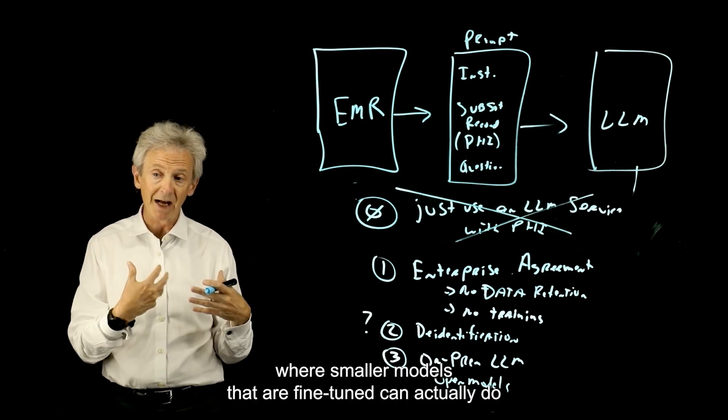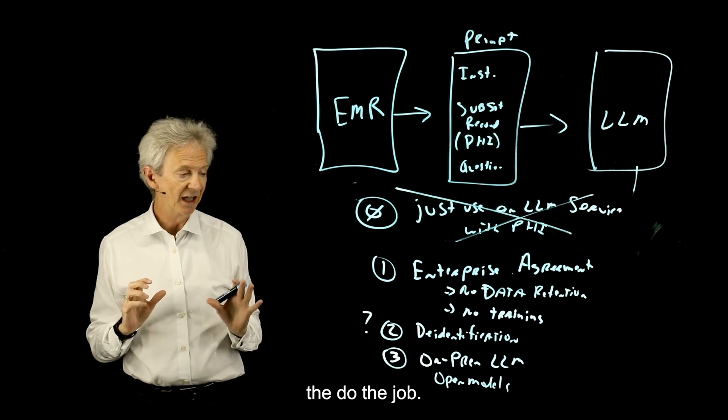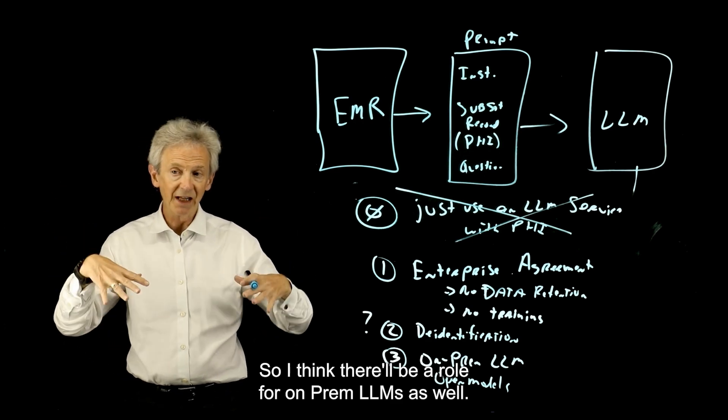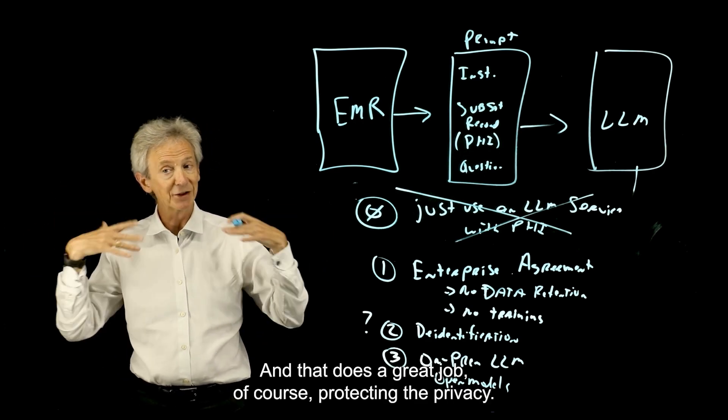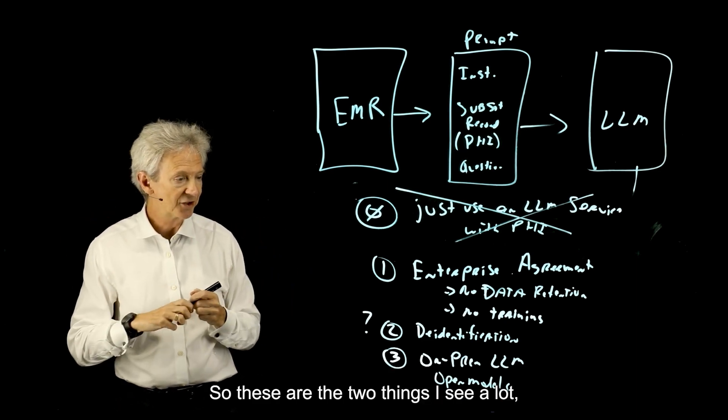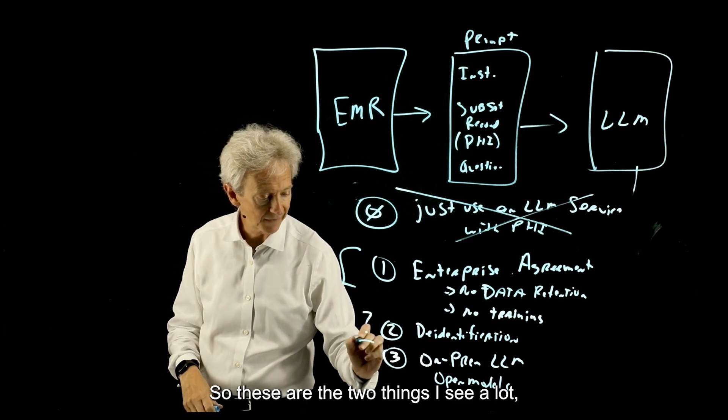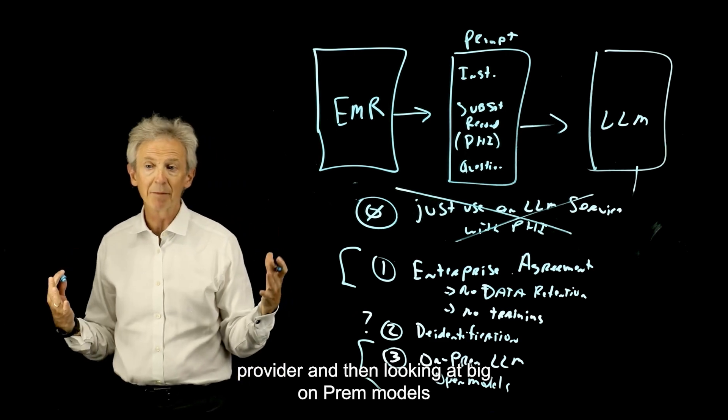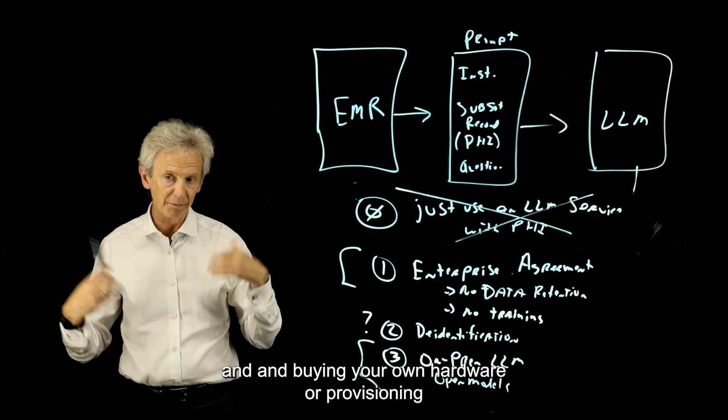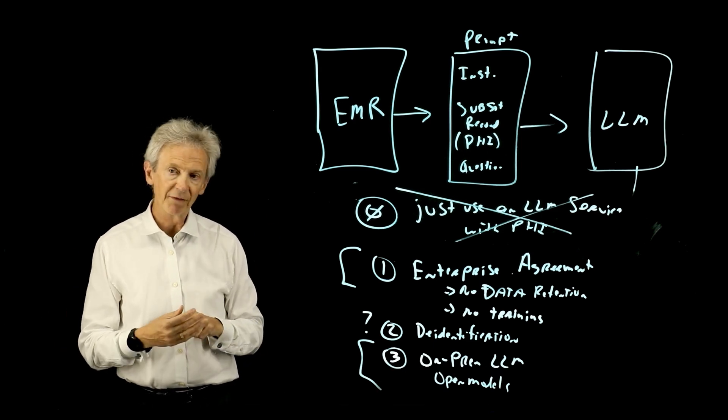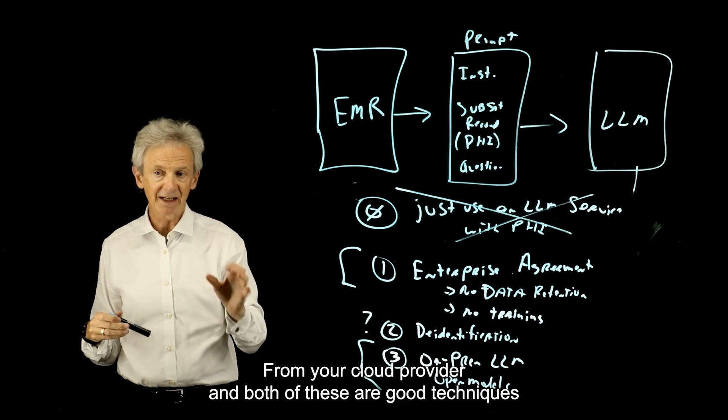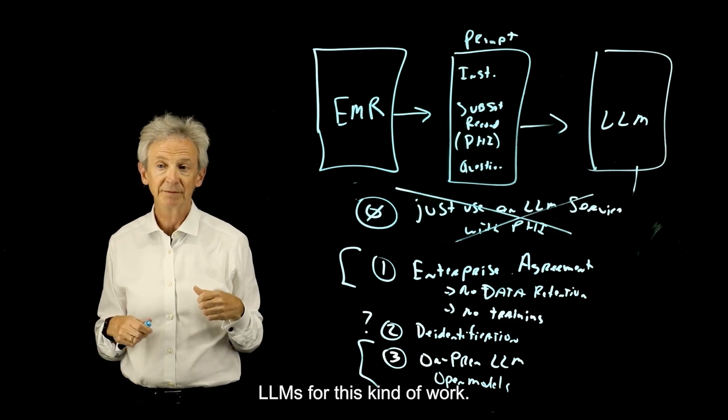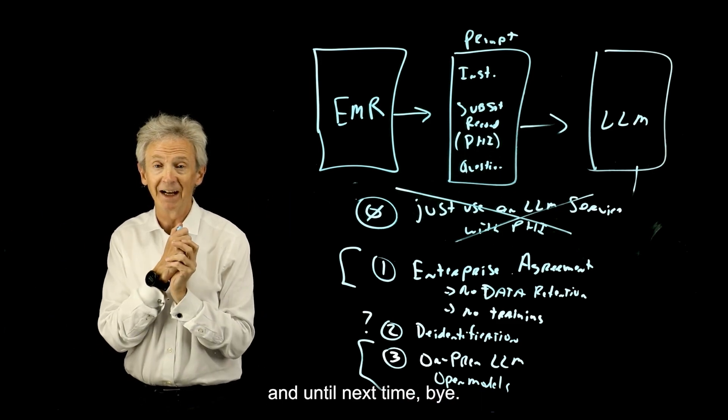But that might be the way you want to do it. And there are some use cases where smaller models that are fine-tuned can actually do the job. So I think there will be a role for on-prem LLMs as well, and that does a great job, of course, protecting the privacy. So these are the two things I see a lot, getting a good agreement with a model service provider, and then looking at big on-prem models and buying your own hardware or provisioning your own hardware from your cloud provider. And both of these are good techniques to protect PHI and leverage LLMs for this kind of work. Okay, hope that was interesting, and until next time, bye.